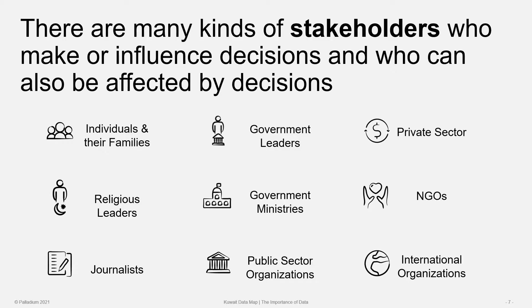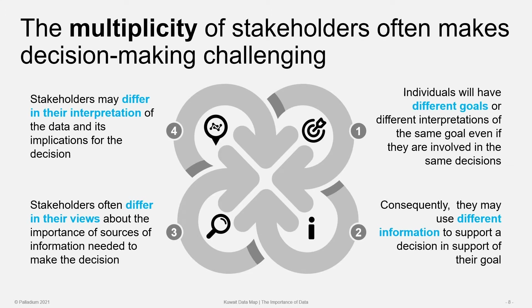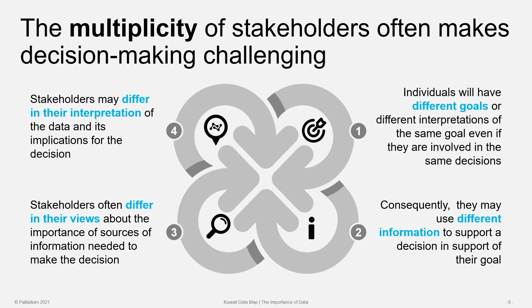Decisions are not made by one person only, and decisions affect more than one person. We refer to these various people or groups as stakeholders, and stakeholders can make or influence decisions and can be affected by those decisions. In the slide you see here, there are several different types of stakeholders: individuals and families, government leaders, private sector, religious leaders, government ministries, NGOs, journalists, public sector organizations, and international organizations. The multiplicity of stakeholders often makes decision-making challenging. With multiple stakeholders, things get complicated quickly, as individuals will inevitably have different goals or may interpret the same goal differently. Consequently, each stakeholder may use different types of information to support a decision in line with their own goals.